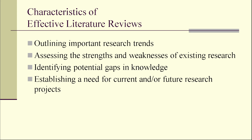Characteristics of an effective literature review include: outlining important research trends, assessing the strengths and weaknesses of existing research, identifying potential gaps in knowledge, and establishing a need for current and future research projects. That is why some universities conduct a systematic literature review first to fully understand the research agenda they selected, to establish a good gap or framework of the problem they have in mind. Another way to understand the flow of the research is to conduct a meta-analysis or systematic literature review.